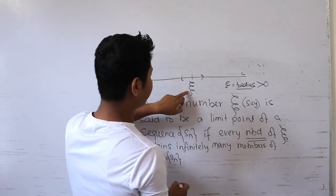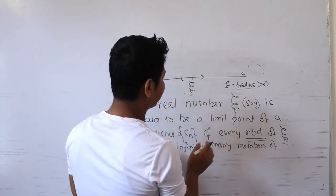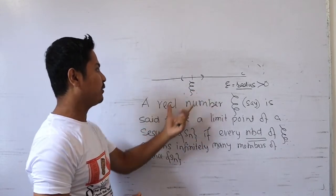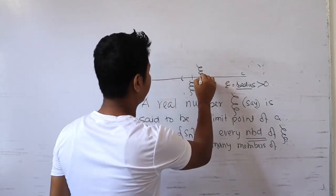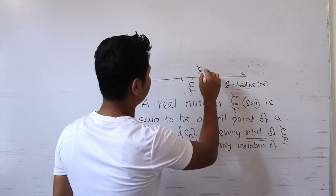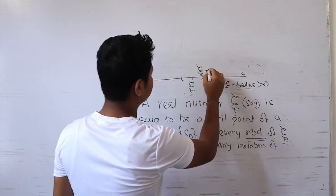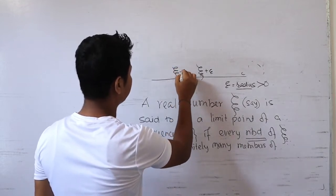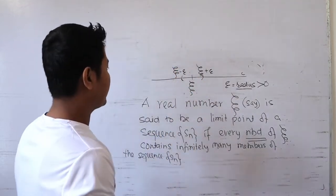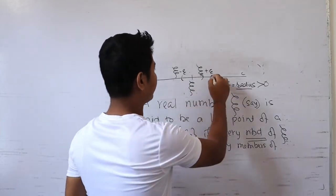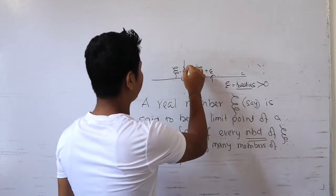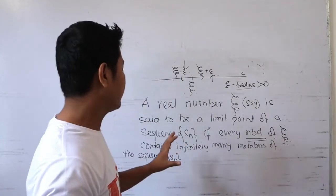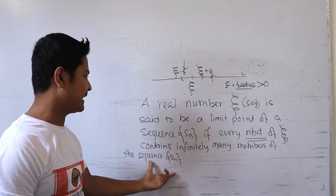So ξ is any real number and we have an epsilon radius, giving us a neighborhood concept. The right-hand end point is ξ plus ε, and the left-hand end point is ξ minus ε. By changing epsilon you can construct different types of neighborhoods.